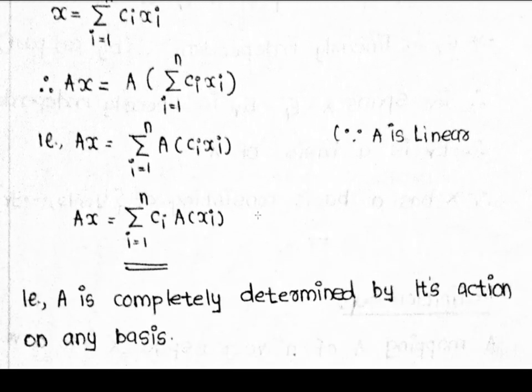Using the linearity property, we replace A(c_i · x_i) with c_i · A(x_i). So A(x) = summation i=1 to n of c_i · A(x_i), which completes the proof.